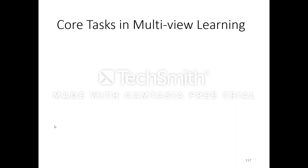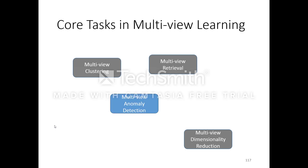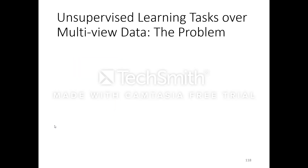Core tasks in multi-view learning include multi-view clustering — taking parallel datasets and clustering objects across them — as well as multi-view retrieval and multi-view dimensionality reduction. Newer areas include multi-view anomaly detection, which asks whether anomalies can be detected better using multiple views, and multi-view data completion, which is a fairly emerging area.